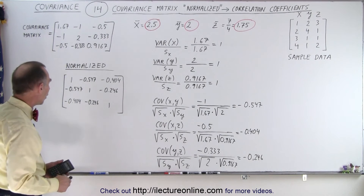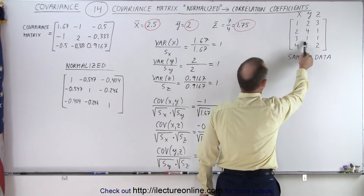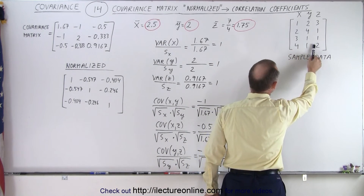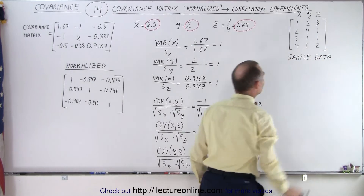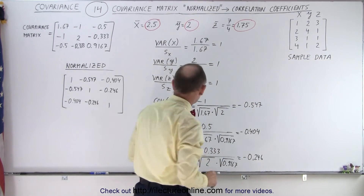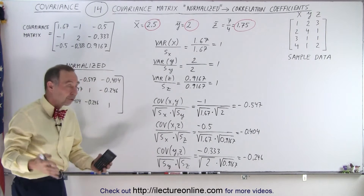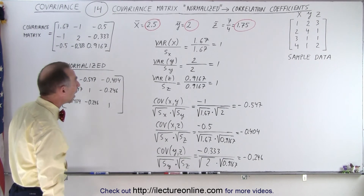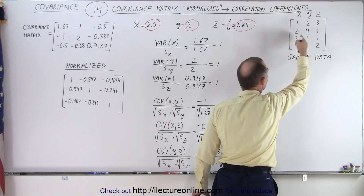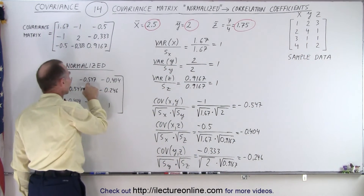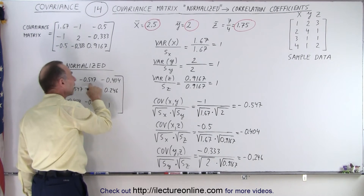Let's look at these values. All of them are negative, which means one is increasing while the other is decreasing. Comparing X to Y: that's clearly the case. Comparing X to Z: that is somewhat the case, but more random — I wouldn't expect a very strong correlation between X and Z. And indeed, negative 0.404 is not a very strong correlation. X and Y shows a slightly stronger correlation at negative 0.547, because there's more of a trend in Y compared to Z.